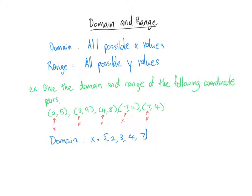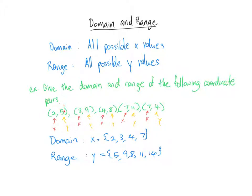So let's go ahead and list the range. The range is our possible y values — I'm pointing to those right now. So we have a bunch of y coordinates here, and we can go ahead and give the range of our coordinate pairs. So our range — notice I use y equals now — range is equal to 5, 9, 8, 11, and 14. I just got those numbers from the y coordinates: 5, 9, 8, 11, and 14.